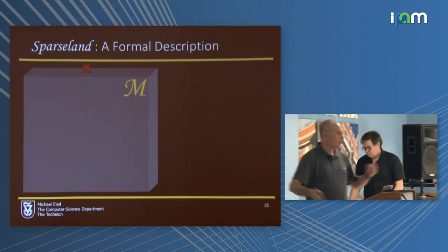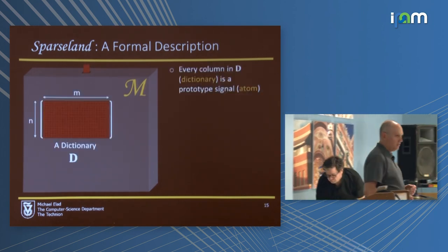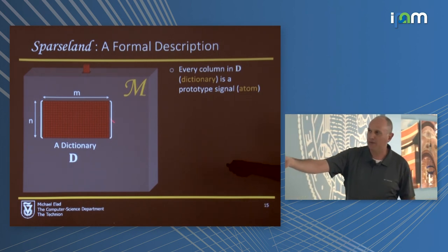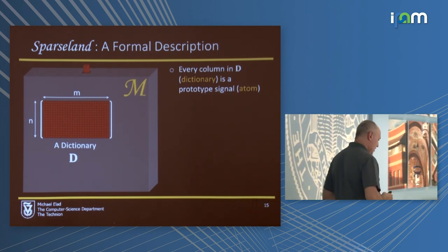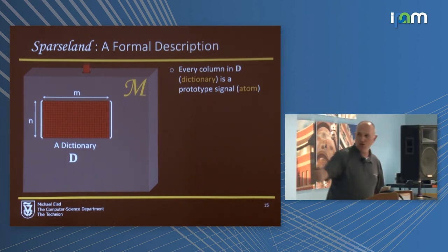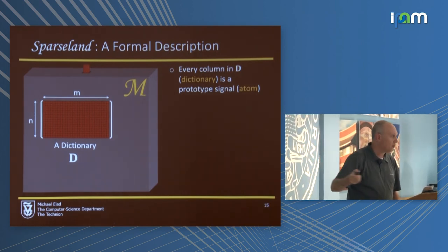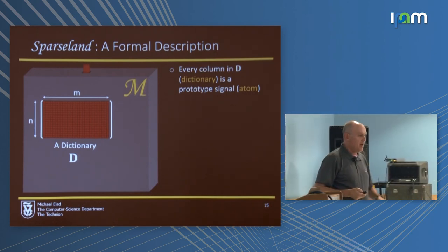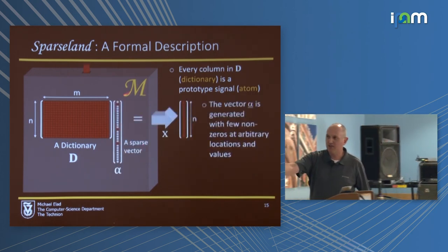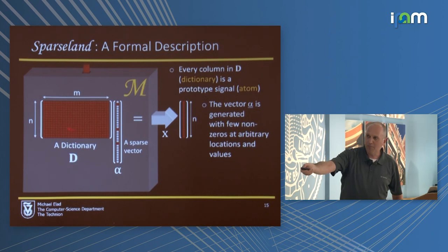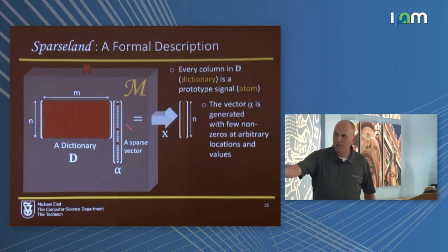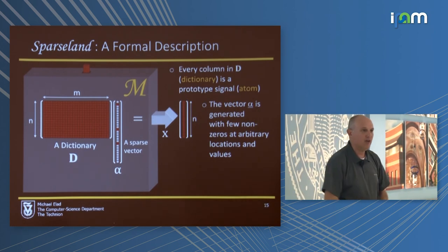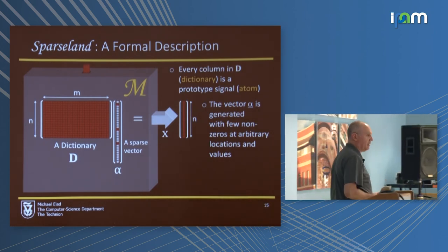Let's be more formal. Here is a machine that generates signals — those patches. In this machine, there is a piece of memory holding the dictionary as a matrix of size n by m. In our story, n is 64 and m is 256; every column is an atom. I press the button and a sparse vector alpha is created. Multiplying D by alpha, we get x. This sparse vector basically chooses some columns from D to combine linearly. This is how we believe signals are created.